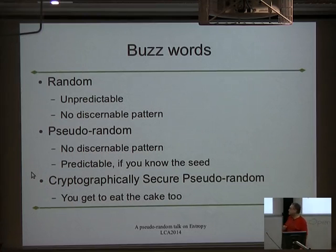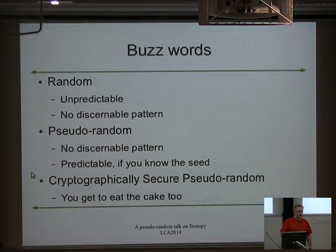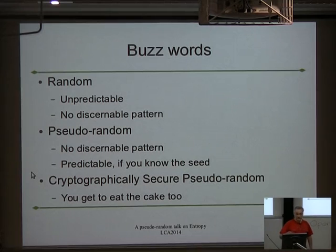A pseudo-random generator is going to produce something which doesn't have a discernible pattern when you look at the output. But like the hashes, it must be completely predictable at some point. Nearly all of them hang off the fact that it's the seed at the beginning that's the thing that helps you generate. We'll cover that in a little bit more detail.